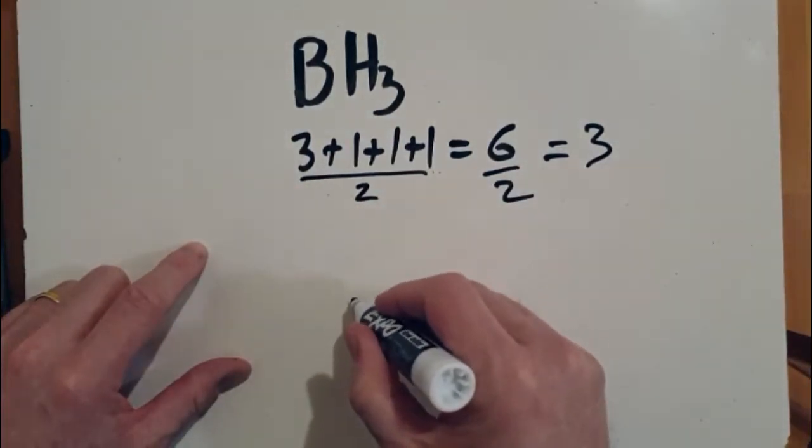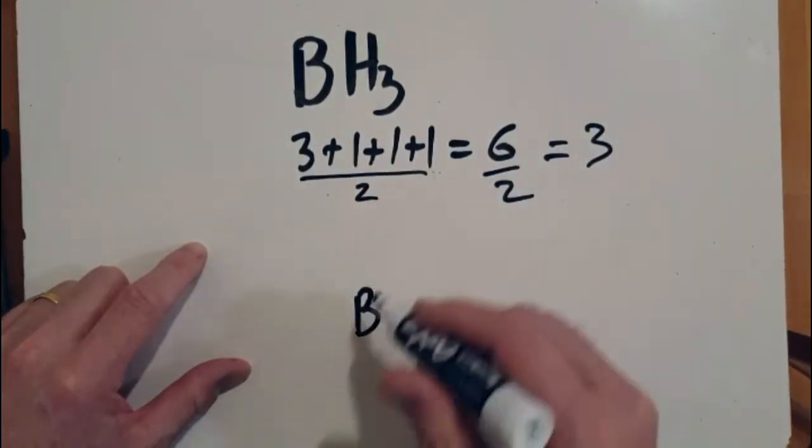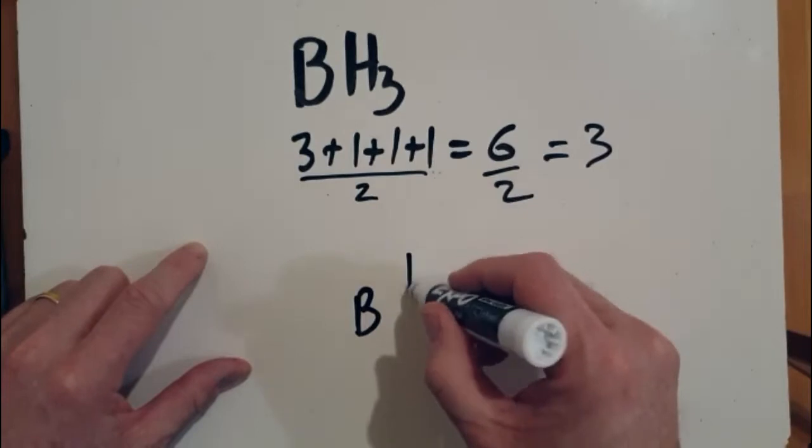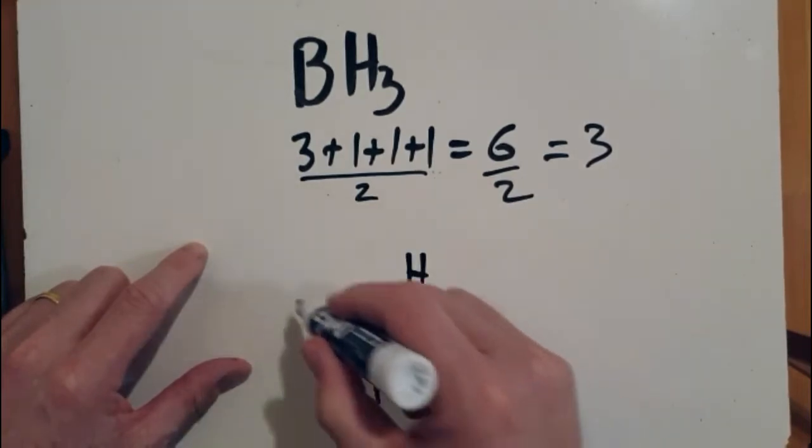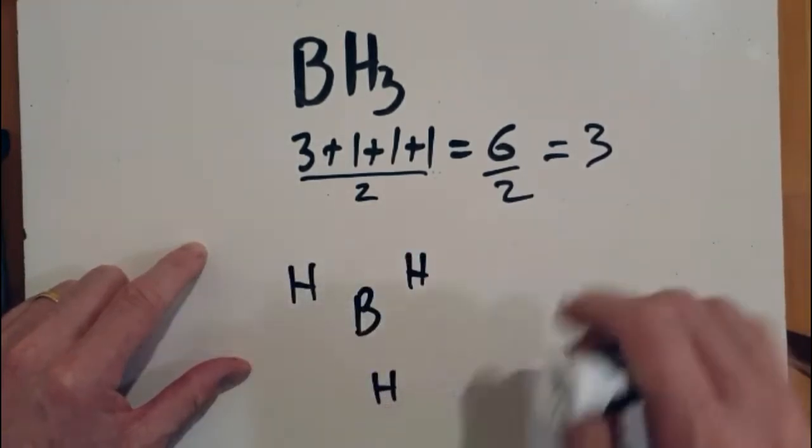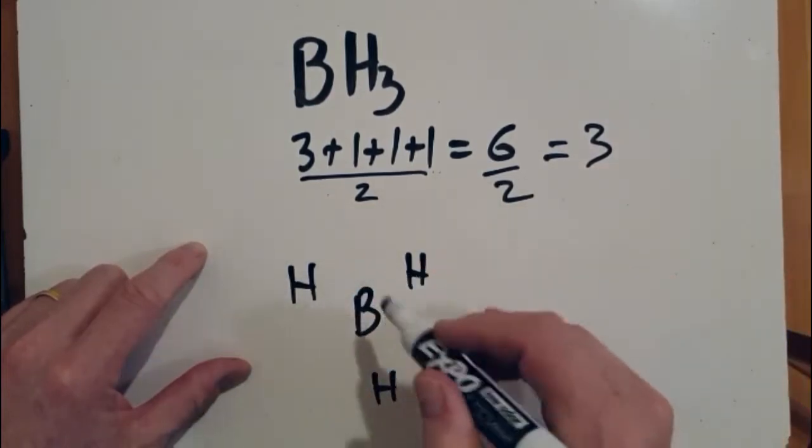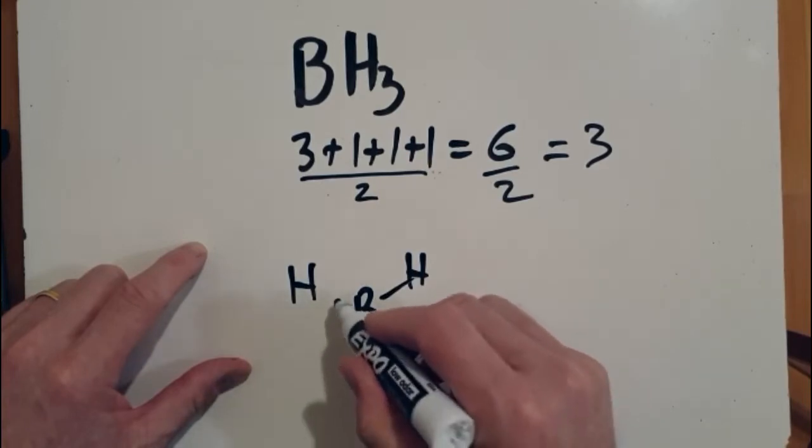B for boron, that's the first atom in the formula, so almost certainly that goes in the middle, and then surround it evenly by the remaining atoms. Now I've got three pairs of electrons to distribute and I've got to make this into one molecule. So really it can only be that, that, and that.